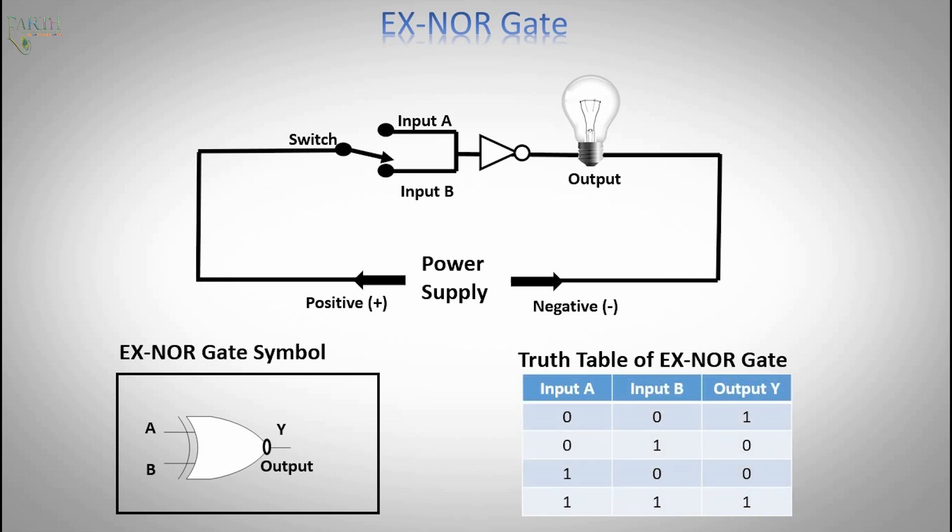Basically the exclusive NOR gate is a combination of the exclusive OR gate and the NOT gate, but has a truth table similar to the standard NOR gate in that it has an output that is normally at logic level 1 and goes LOW to logic level 0 when any of its inputs are at logic level 1.